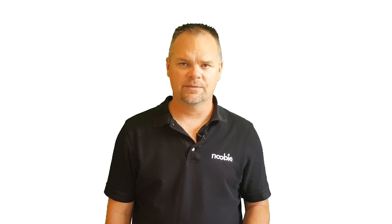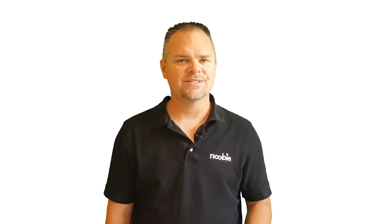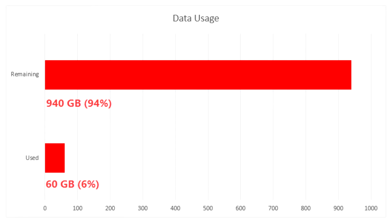So how much data are you using each month? Well, while each customer varies, the typical Comcast customer uses about 60 gigabytes each month. That's only 6% of a terabyte, which means the typical Comcast customer has 94% of their data plan, or 940 gigabytes, remaining at the end of each month.